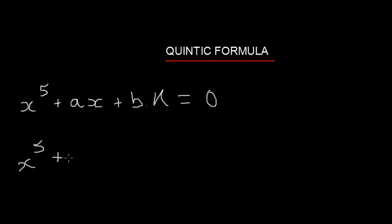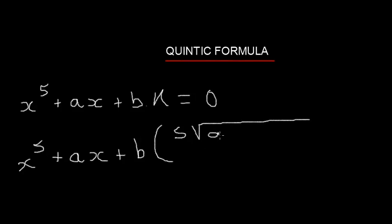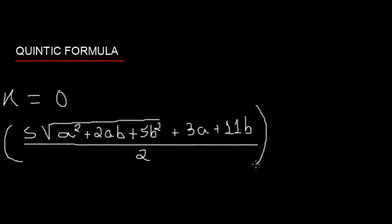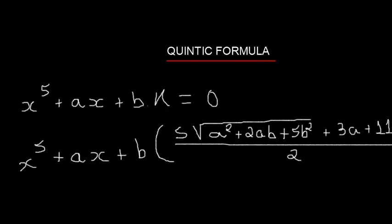Here is the idea. X plus A, X plus B: 5 times the square root of A squared plus 2AB plus 5B squared, plus 3A plus 11B, divided by 2. All equations of this kind are solvable by radicals.